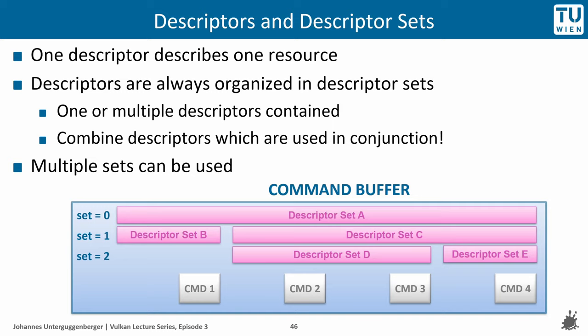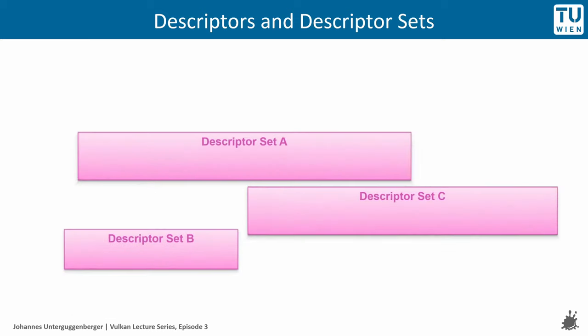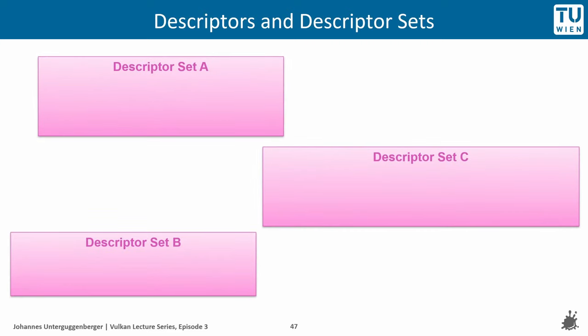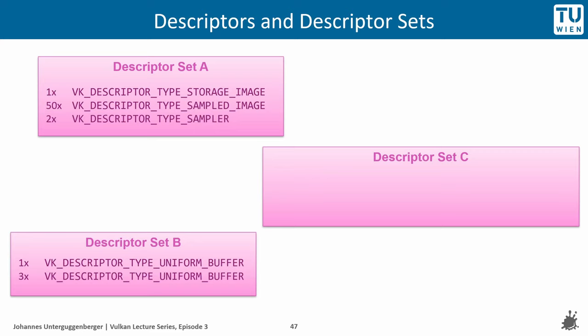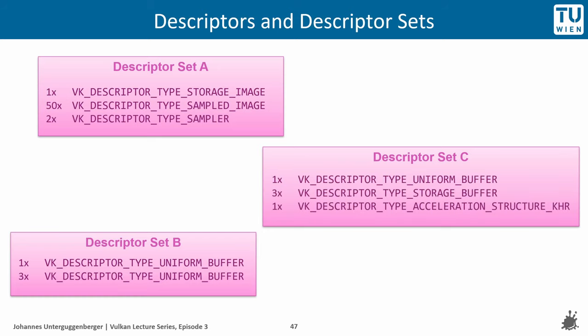Looking at what could exemplarily be contained within descriptor sets: descriptor set A contains one storage image descriptor, 50 sampled image descriptors, and 2 sampler descriptors. Descriptor set B contains 1 uniform buffer descriptor and an array of 3 uniform buffer descriptors bound to a different binding ID. Descriptor set C contains 1 uniform buffer descriptor, an array of 3 storage buffer descriptors, and 1 acceleration structure descriptor.